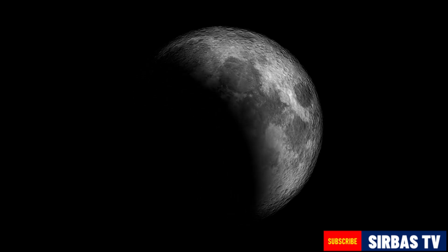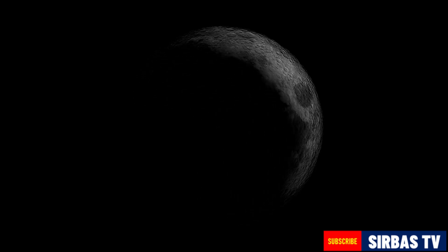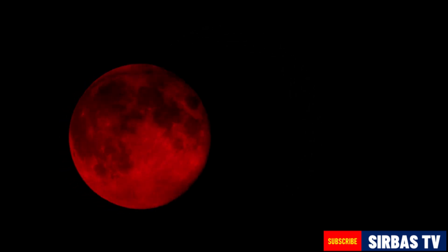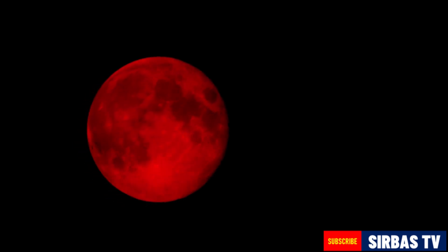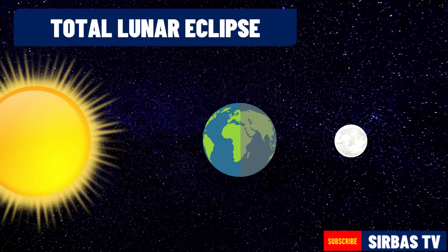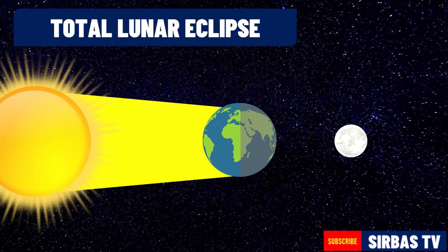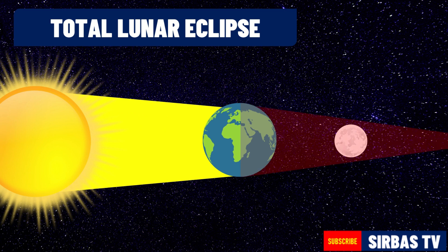Although the earth blocks the light coming from the sun, some sunlight still reaches the moon. During the total lunar eclipse, the moon can turn into a reddish color. This happens because as the light coming from the sun enters the earth's atmosphere, the blue light and other colors are filtered out. Only the red color enters the atmosphere and is refracted on the moon.